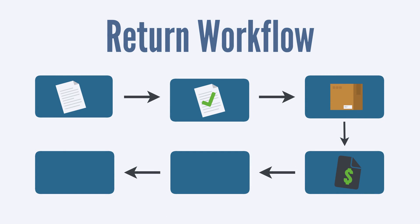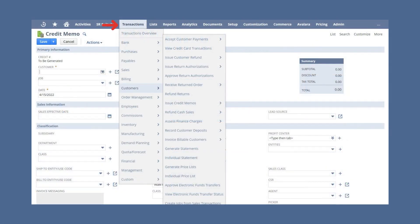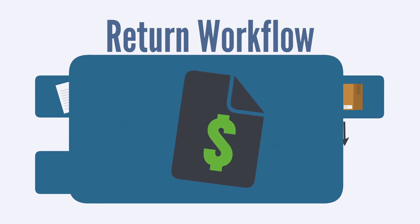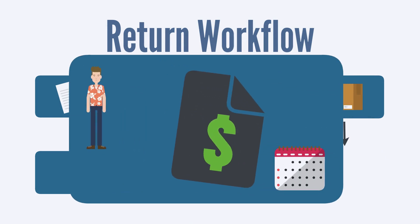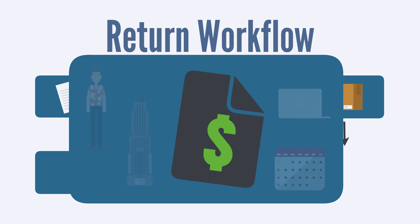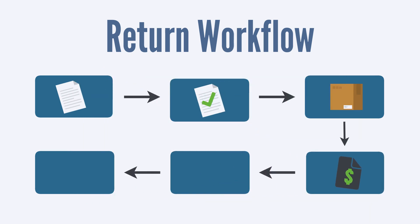The next step is to issue a customer credit memo for the return. A credit memo decreases the amount that a customer owes the business. To issue a customer credit memo, navigate to Transactions > Customers > Issue Credit Memos. Fill in all the relevant information: the customer, the posting period the credit memo applies to, the location associated with the credit, and the items being credited. After you save this credit memo, your inventory will be affected accordingly.